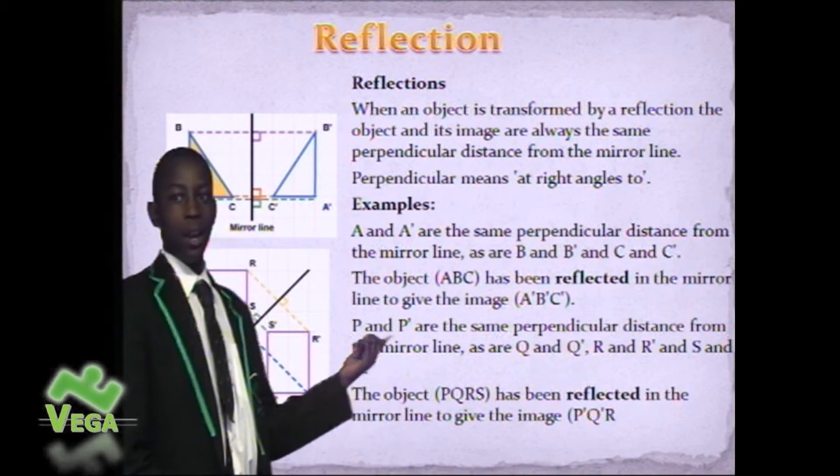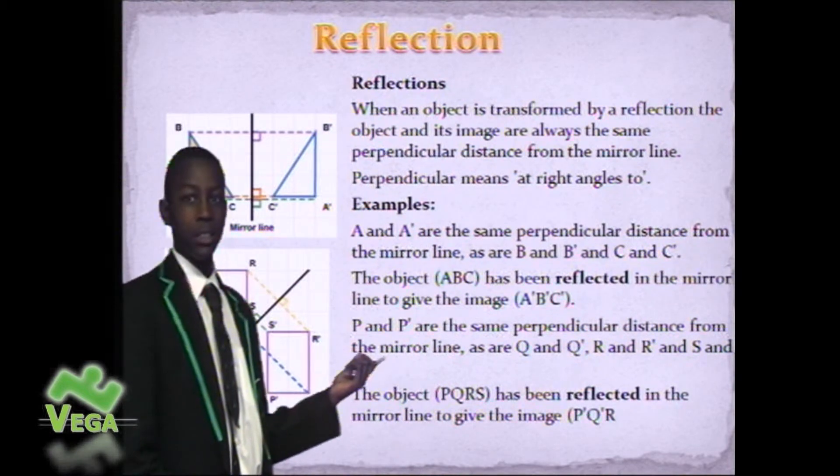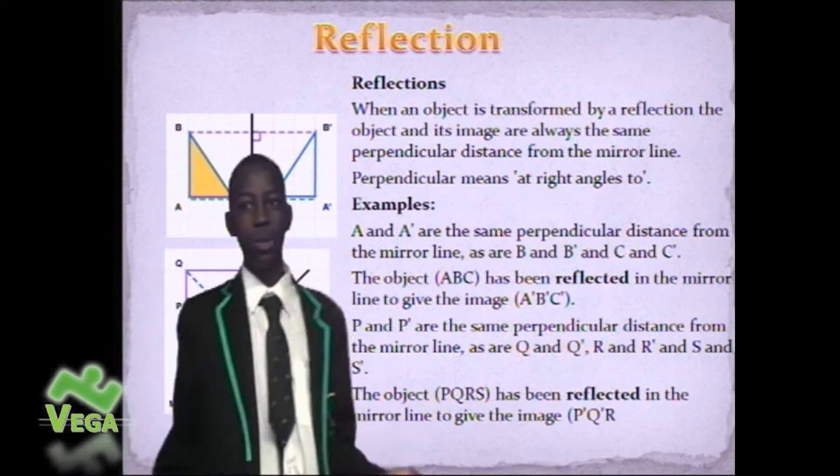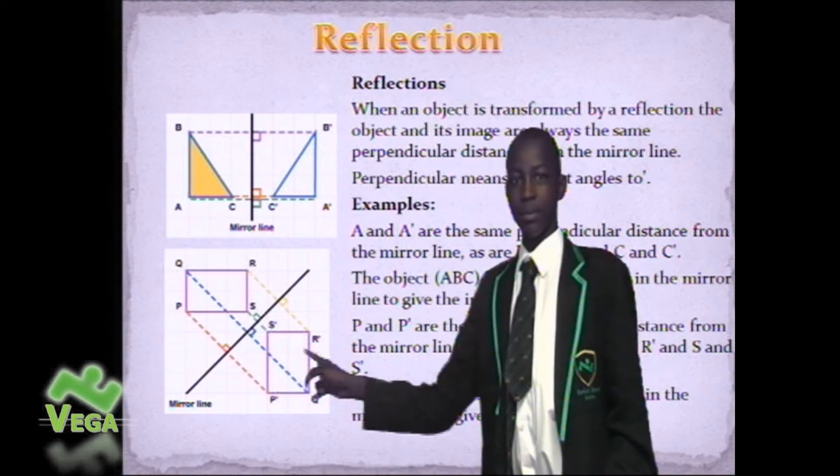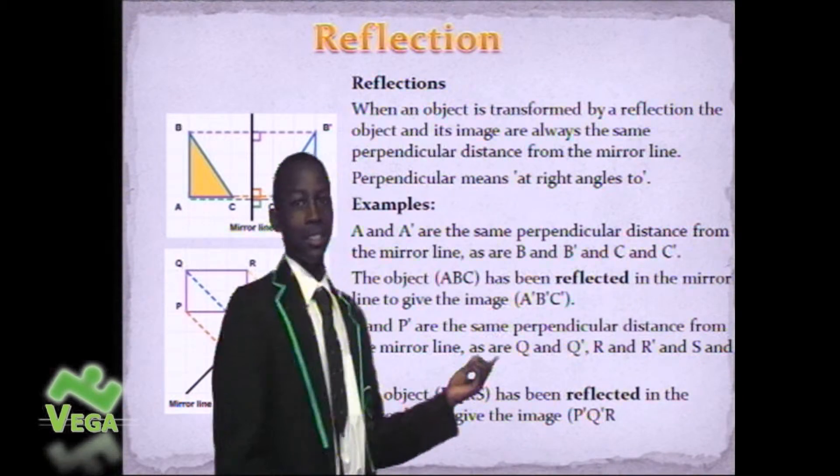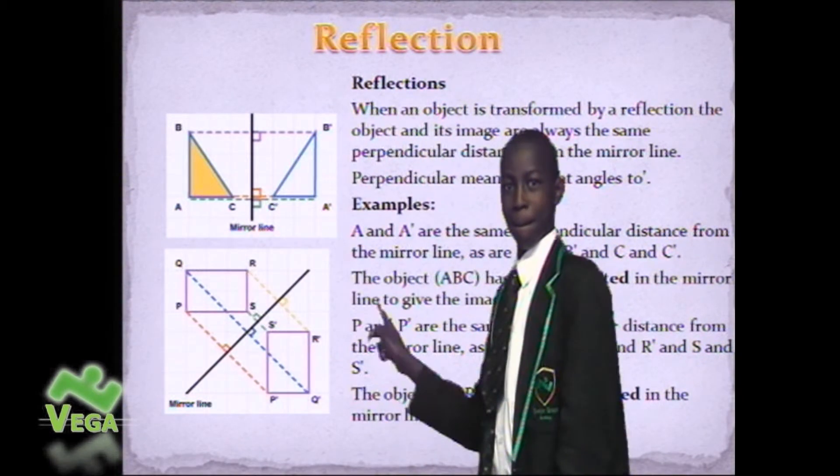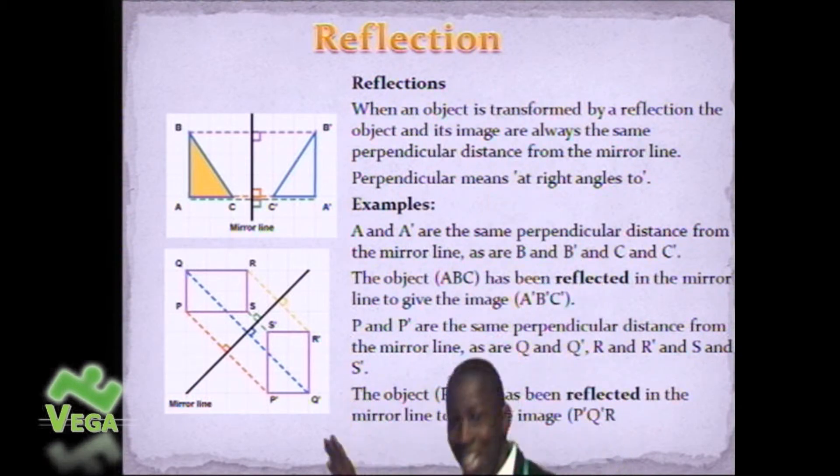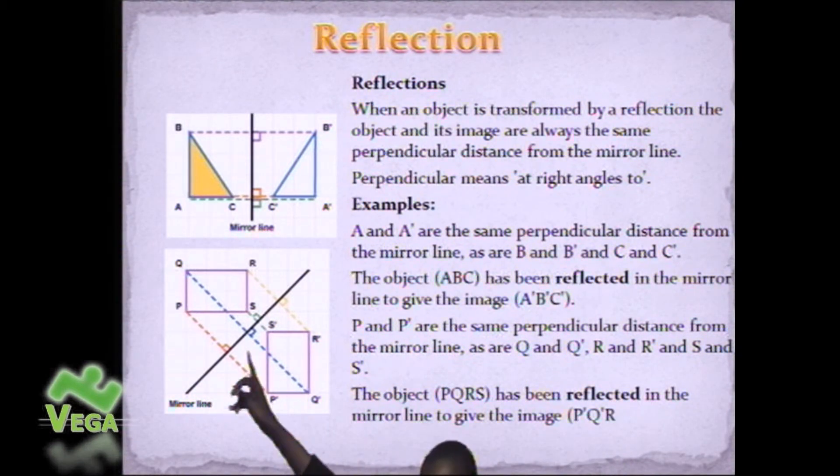P and P are the same perpendicular distance from the mirror line, as are Q and Q, R and R, and S and S. The object PQRS has been reflected in the mirror line to give the image PQRS.